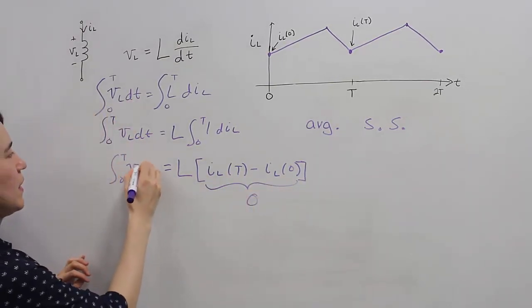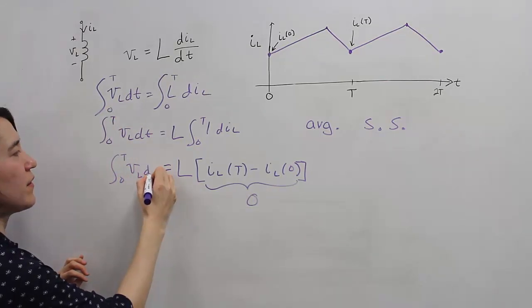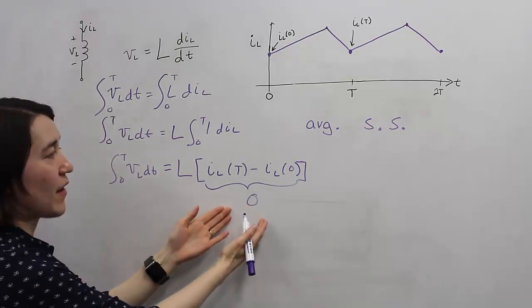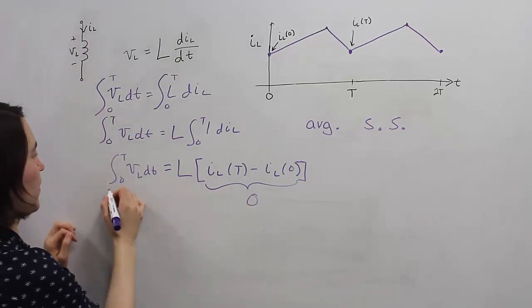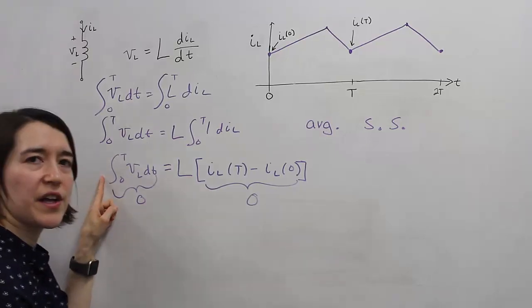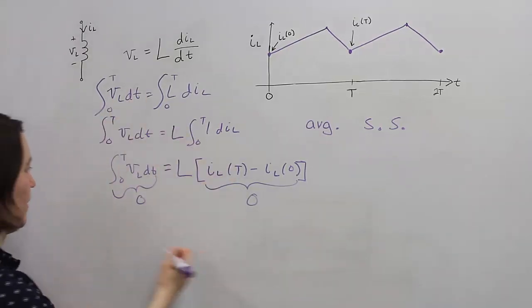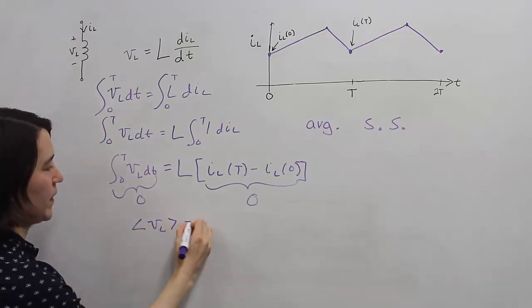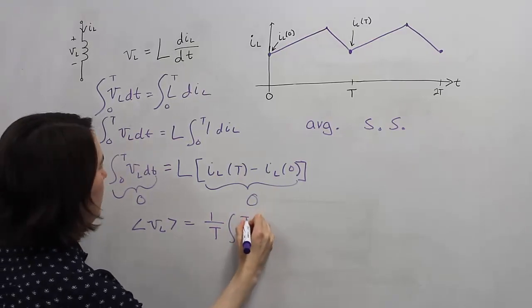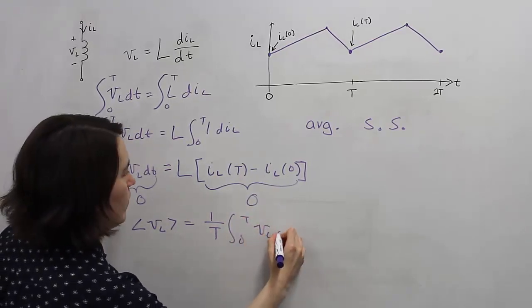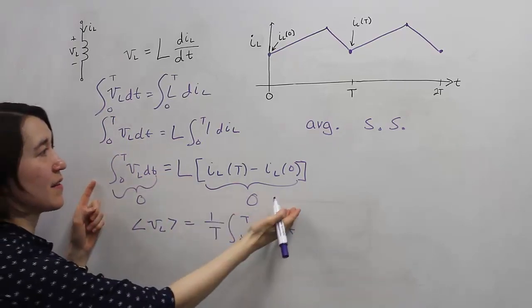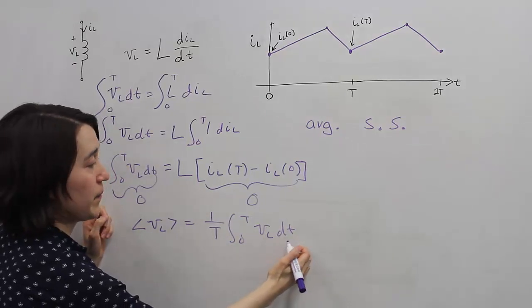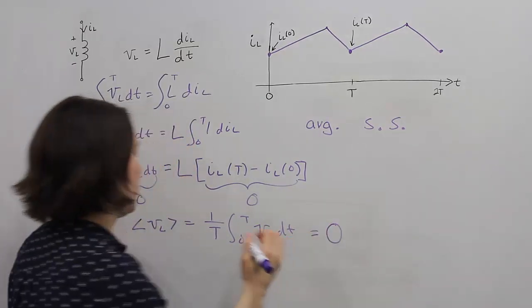This is the integral of the voltage over the inductor over one period. If this value is 0, it means that this value must also be 0. This value relates to the average value of the inductor. So the average voltage is equivalent to 1 over T times the integral. We just found that in average steady state, this value must be 0, which means this whole value must be 0.